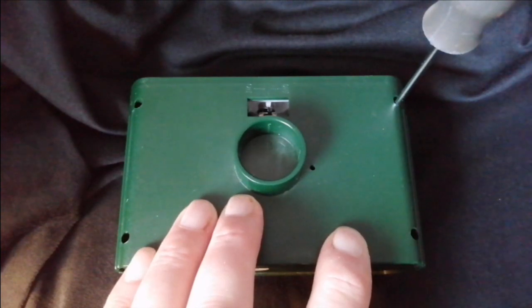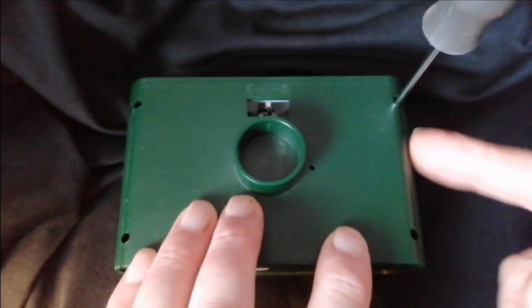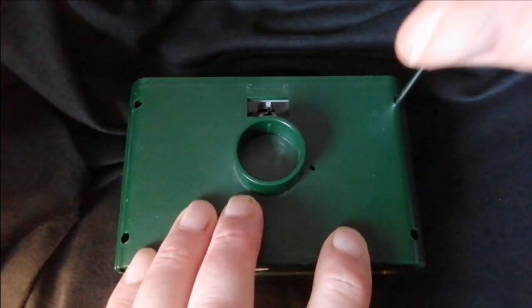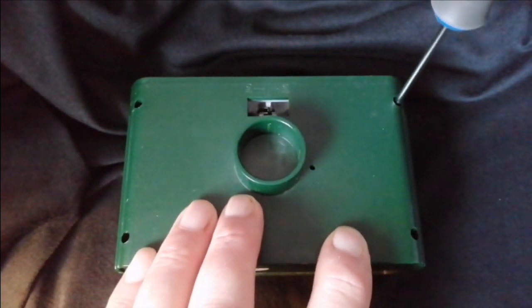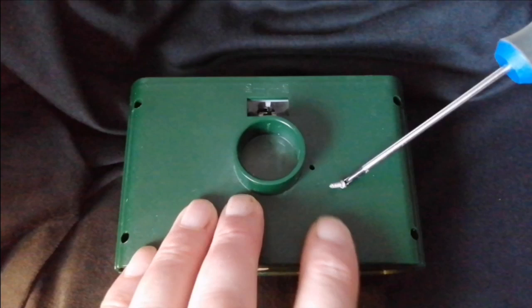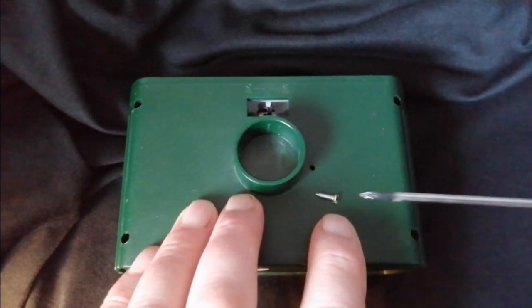To get it apart you just undo these four screws on the bottom. The screws themselves are miniscule but at least they're magnetic which helps. They're tiny little things. Easy to lose.